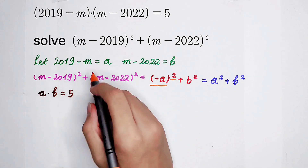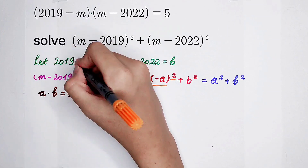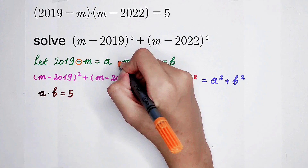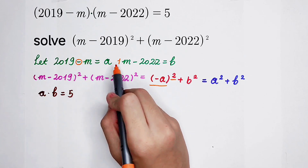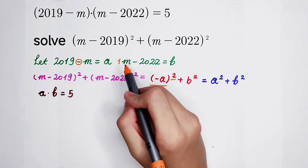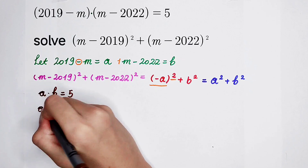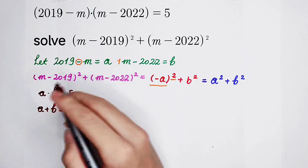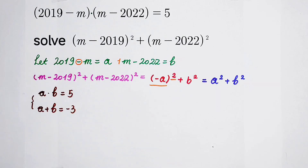For the second equation, notice that in a the coefficient of m is negative 1, and in b the coefficient of m is positive 1. So if we add a and b together, the m terms cancel. Therefore a plus b equals 2019 minus 2022, and the m terms cancel out, giving us a plus b equals negative 3.